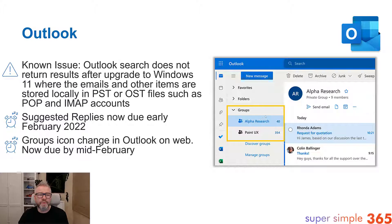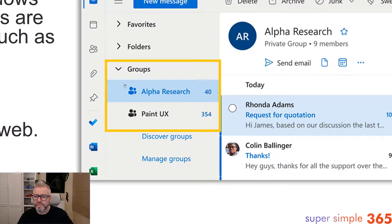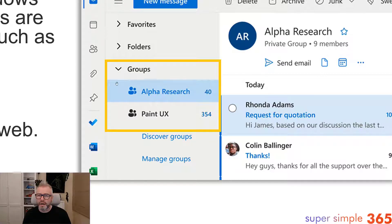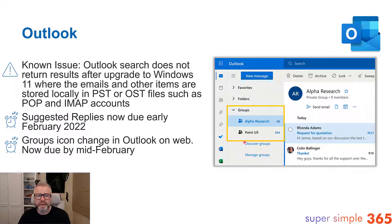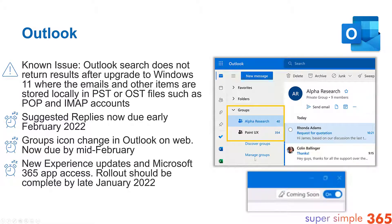Sticking with Outlook on the web, the group icons are changing. These groups used to have a file type icon, but this new icon looks like the people/group icon that Microsoft normally associates with groups. That's due by mid-February.